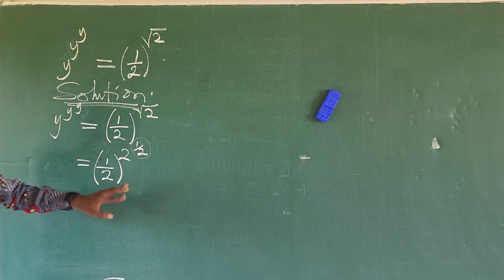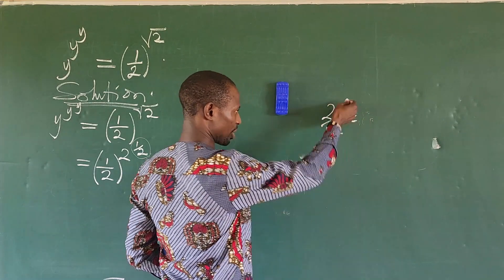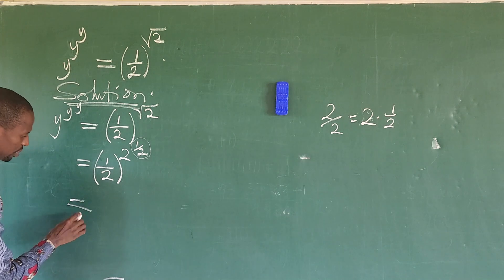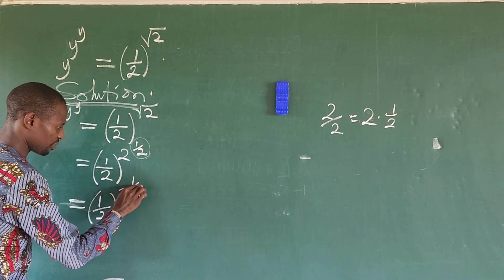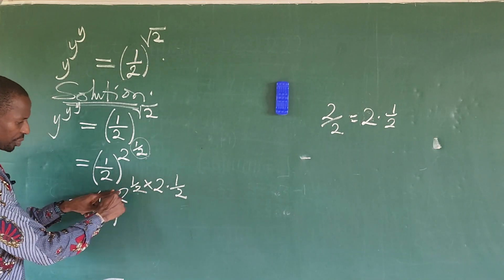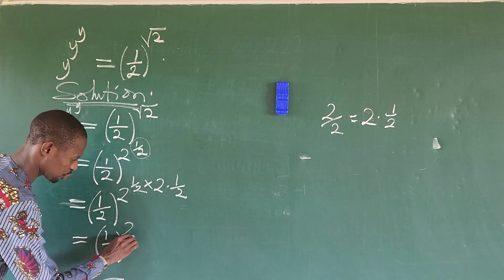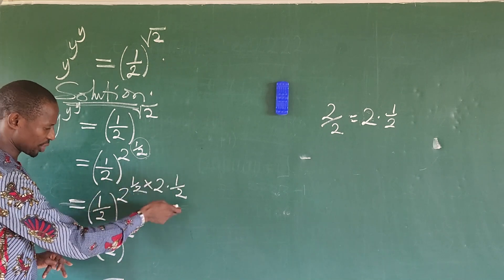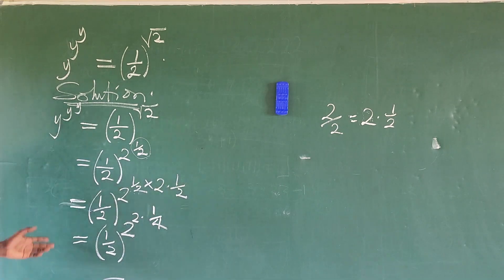Multiplying the exponent by 2 over 2 — which equals 1 — doesn't change the value. I separate 2 over 2 to give me 2 times 1 over 2, and multiply the exponent by that. So this gives us 1 over 2, raised to 2, raised to 1 over 2, times 2 dot 1 over 2. Moving these two and multiplying the fractions: 1 over 2 times 1 over 2 gives us 1 over 4. So we have dot 1 over 4.